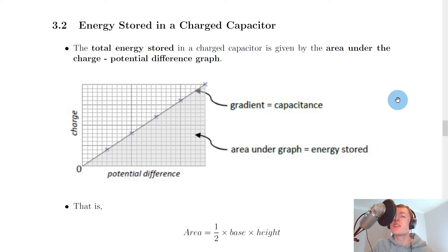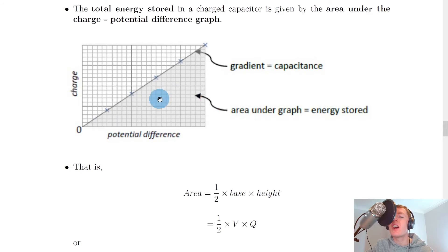Now we can actually find the energy stored in a charged capacitor from the graph of charge against potential difference for the capacitor. The total energy stored in a charged capacitor is given by the area under the charge potential difference graph. There's our charge on the y-axis and potential difference on the x-axis and our straight line through the origin. We've seen this graph before. Remember the gradient of this straight line is going to give you the capacitance and that let us form the equation c equals q over v for capacitors. But we're now saying that the area under the graph, which is this triangle here, is actually equal to the energy stored in the capacitor.